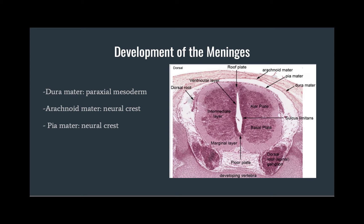The meninges also form in conjunction with the formation of the primary and secondary brain vesicles. Another thing to bear in mind is that the meninges are not solely forming in the cranial region — they are forming along the length of the entire neural tube. Shown here is a histology slide taken from an embryo, where you can see the developing spinal cord in the center.